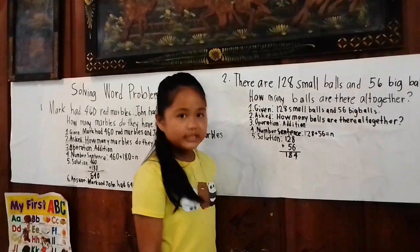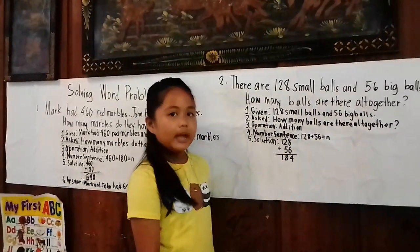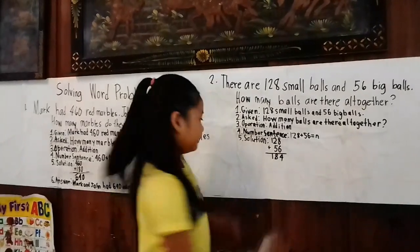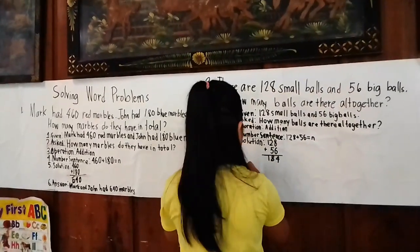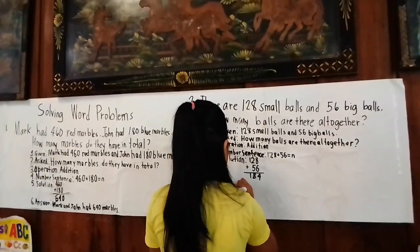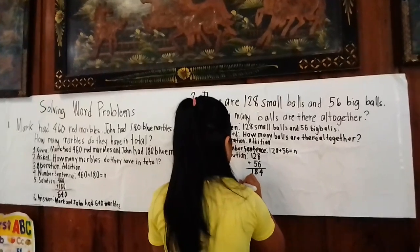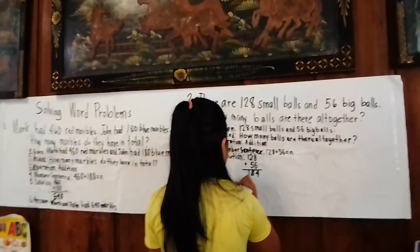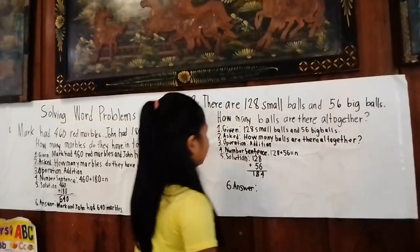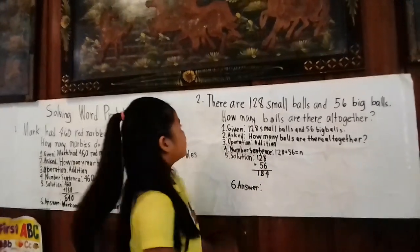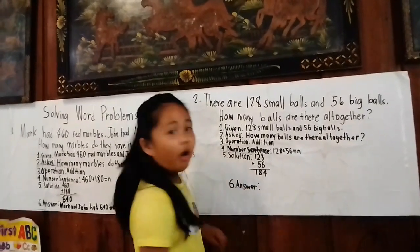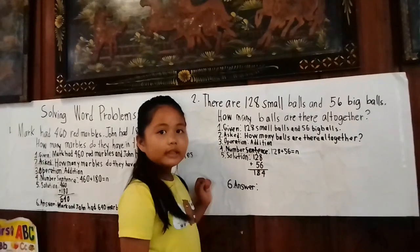What is the last step? The last step is 'Answer.' The answer is: There are 184 balls altogether.